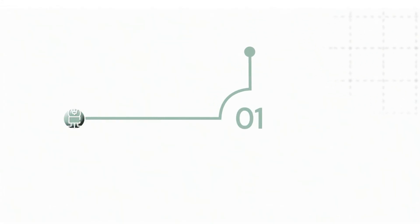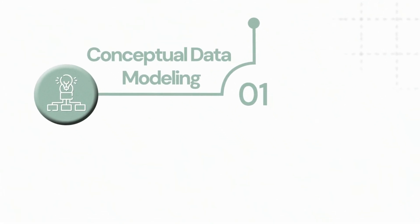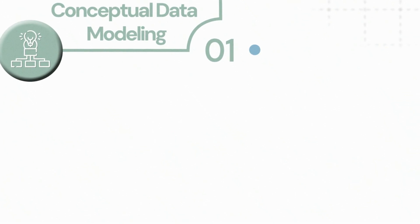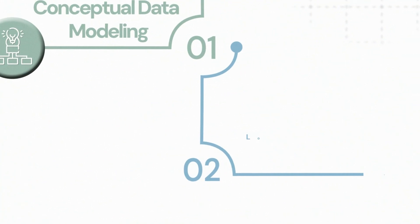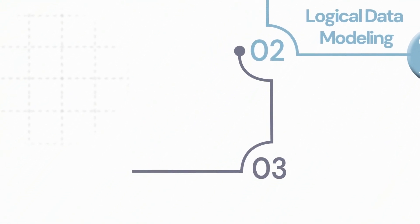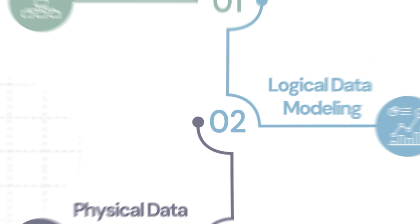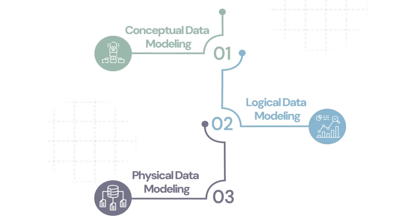At the highest level, it's called conceptual data modeling. Then we're going to go over the next layer down, which is logical data modeling. And then the final layer is physical data modeling. By the end of this video, you should know all the ins and outs of all three types.